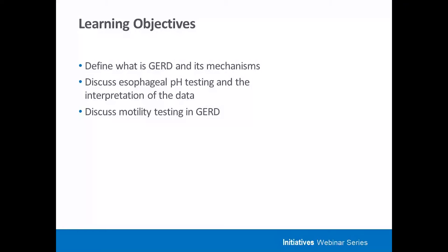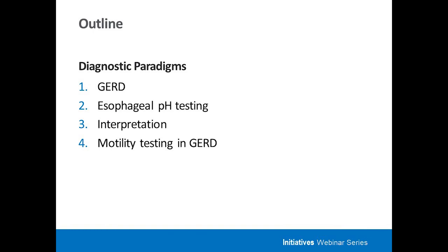An outline today and some objectives. We'll first define what is GERD and talk about some of its mechanisms. We'll discuss the primary mode by which GERD is diagnosed, which is with esophageal pH testing, and certainly focus a bit on the interpretation of that data. We'll also talk about motility testing in GERD, which is an essential component both for identifying mechanisms of GERD as well as ruling out alternate potential diagnoses that can mimic GERD symptomatically.